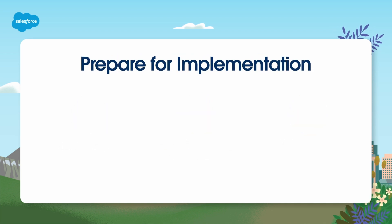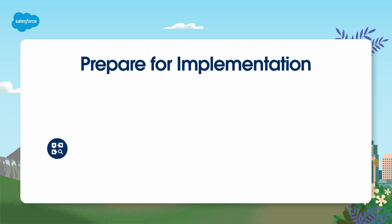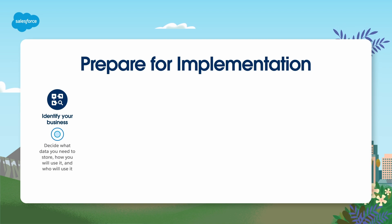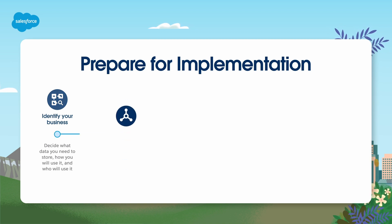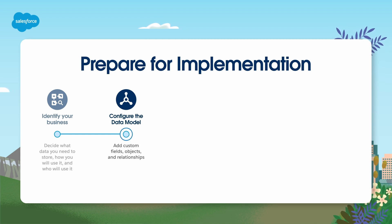You can prepare to implement Health Cloud for medical technology and pharmaceutical businesses by addressing these steps. First, identify your business requirements — decide what data you need to store, how you will use it, and who will use it. Second, configure the Health Cloud data model to match your requirements by adding custom fields, objects, and relationships.